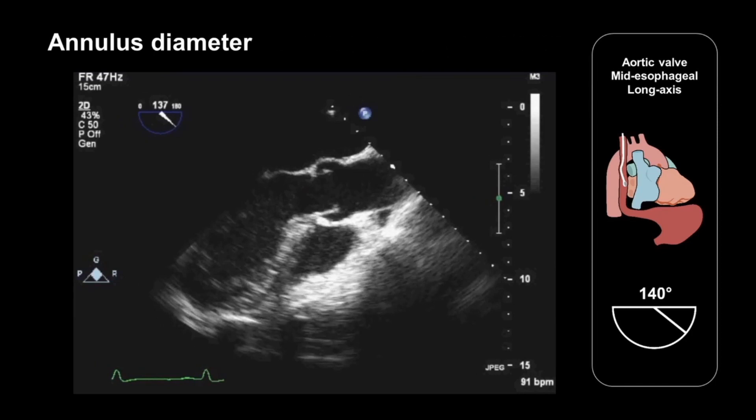We should also measure the diameter of the aortic annulus between the hinge points of the aortic valve. This measurement, together with the previous LVOT diameter measurement, should be taken in early to mid-systole. Other measurements of the aortic root are discussed further in the chapter on the aorta.